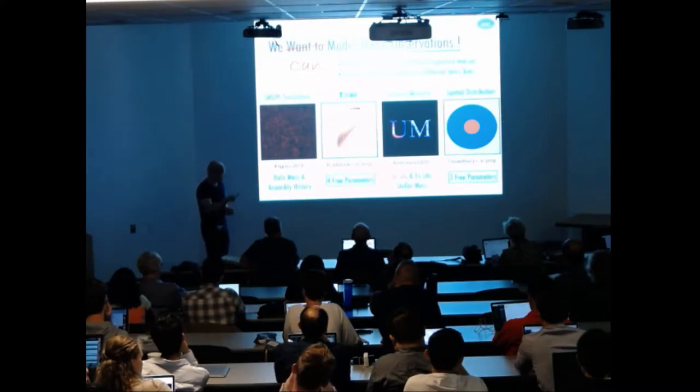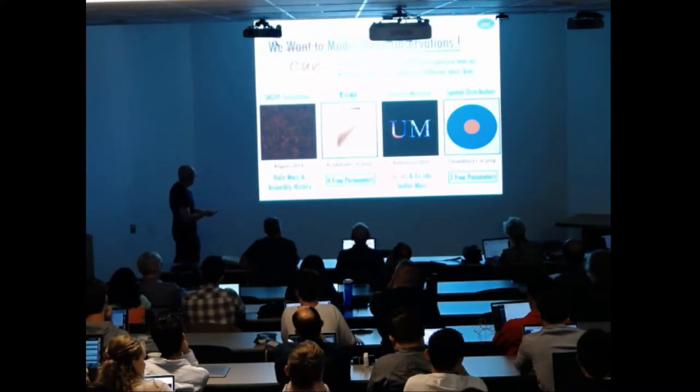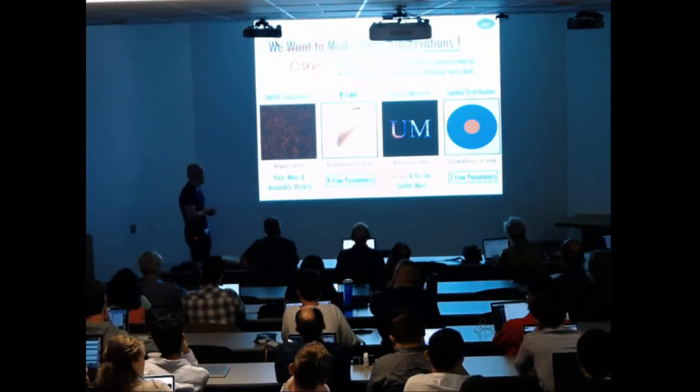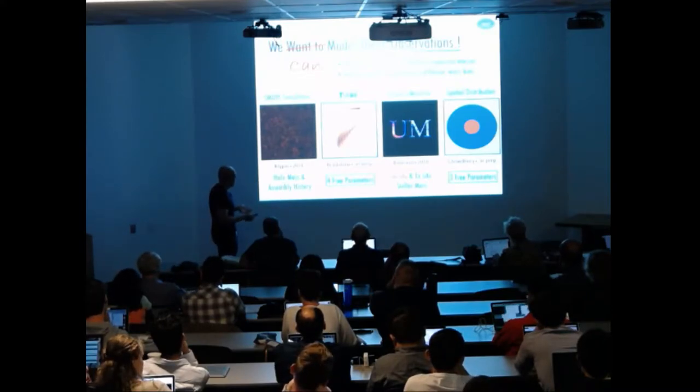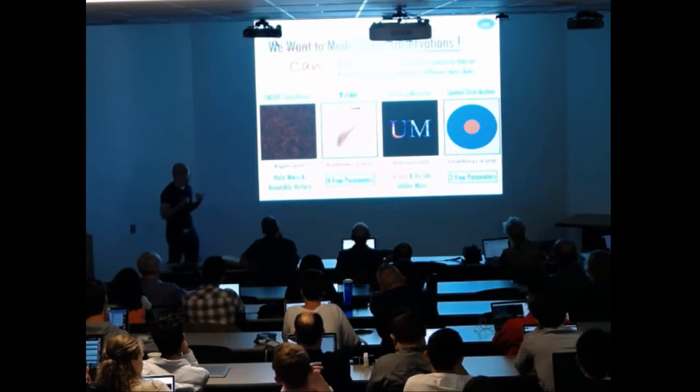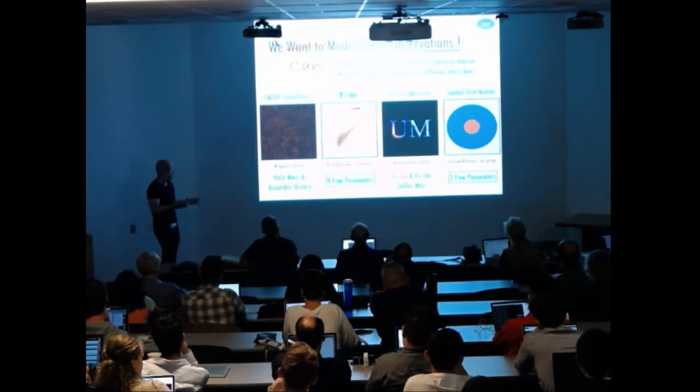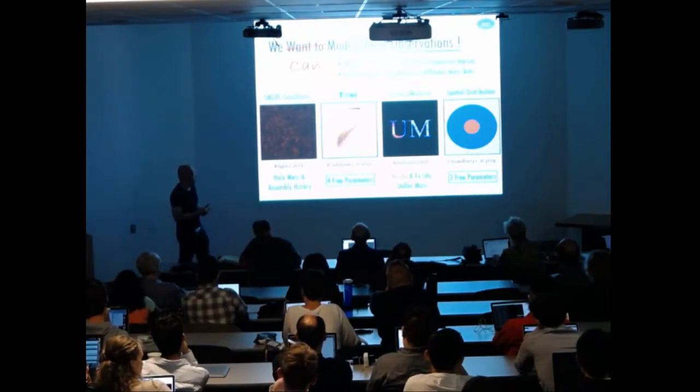So in total, combining together, we have a model, an empirical model that is pretty simple with only seven free parameters. And we basically write down likelihood function, provide some realistic priors, and feed them into MCMC sampling machine. What we can get?